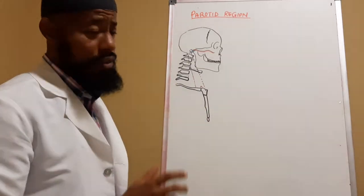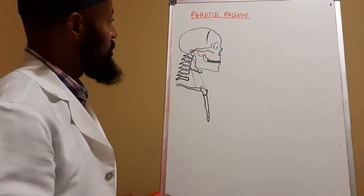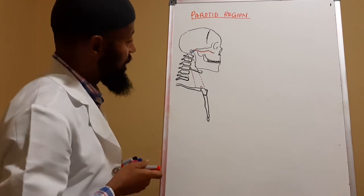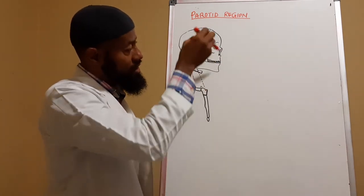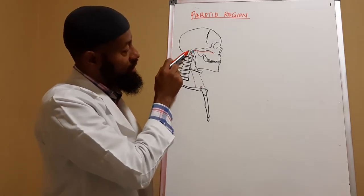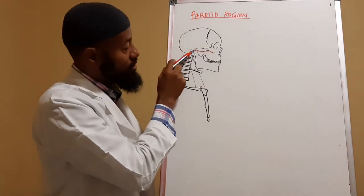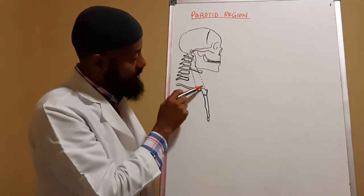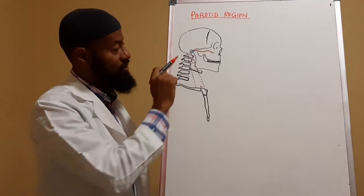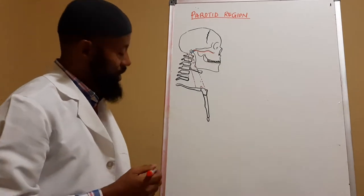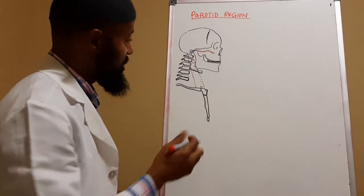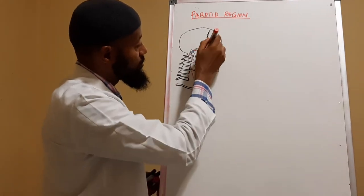Now we want to outline the boundaries of this region, which is very important in anatomy. It is bounded superiorly — you see the red line drawn inferior to the zygomatic arch — that is the superior boundary. The posterior boundary is the external acoustic meatus opening, represented with a red line, and also the sternocleidomastoid muscle. The anterior boundary is formed by the masseter muscle, which is one of the muscles of mastication located right here.